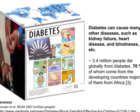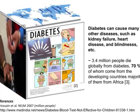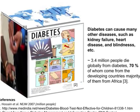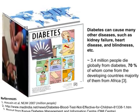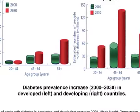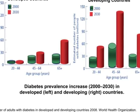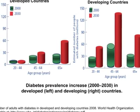3.4 million people in the world die due to the disease. 70% comes from developing countries, with a majority in Africa. The population of diabetics in developing countries is increasing dramatically.